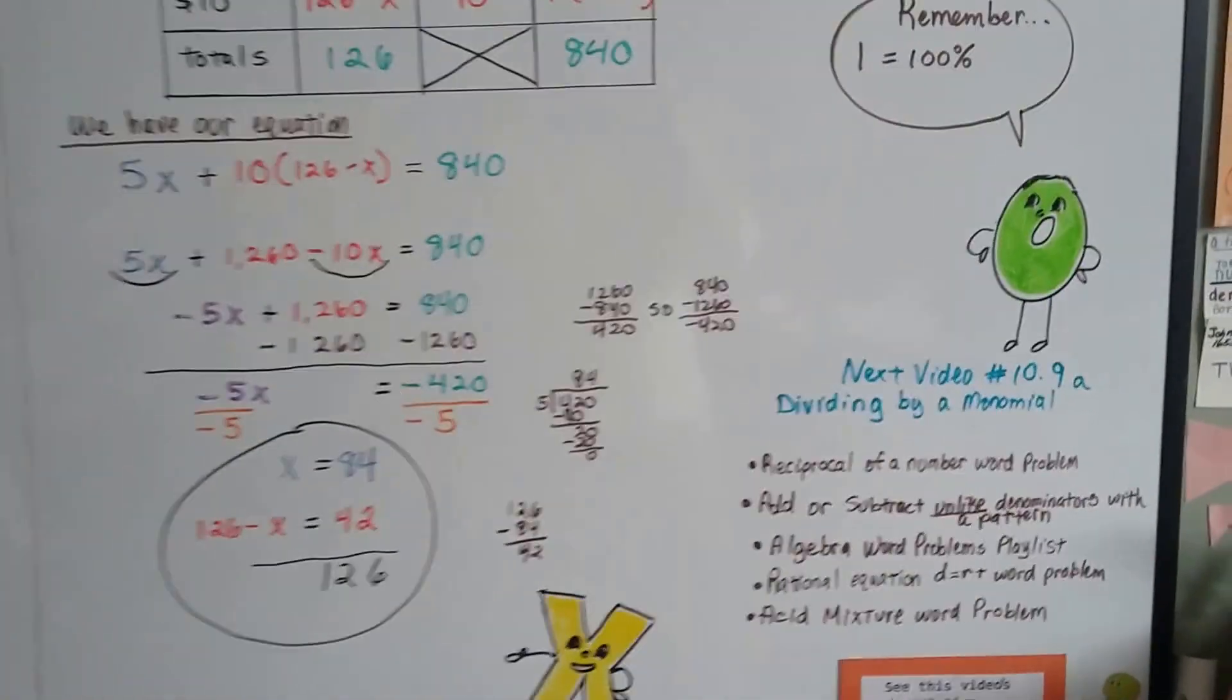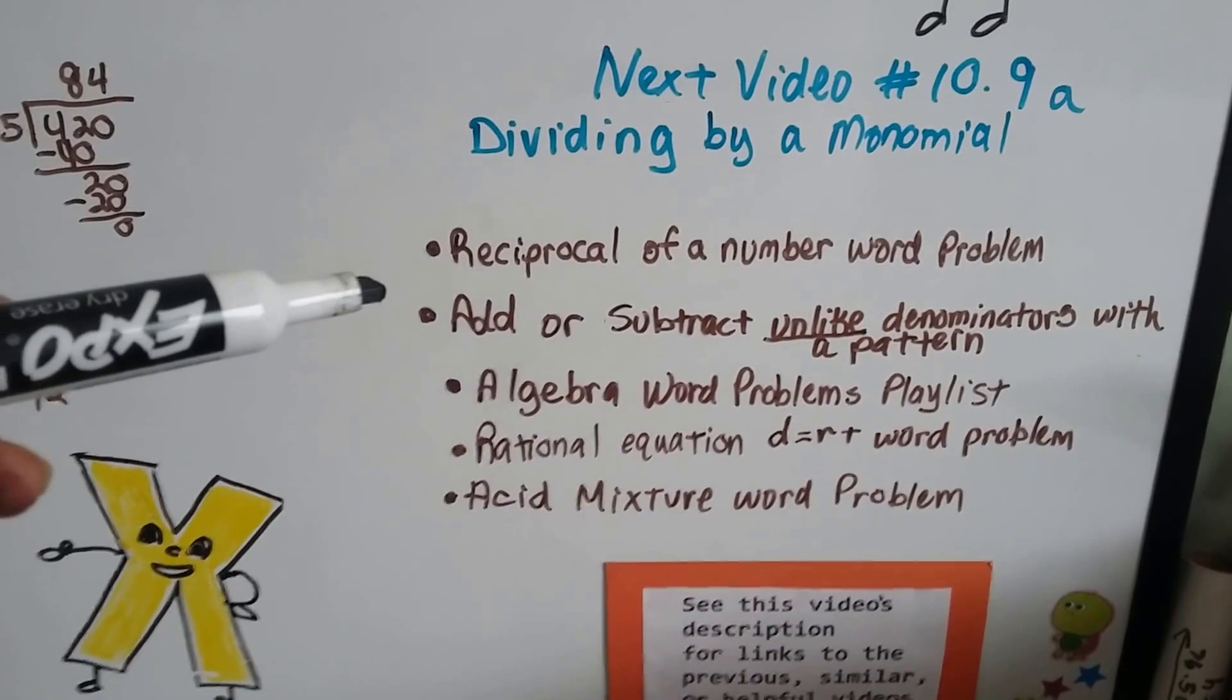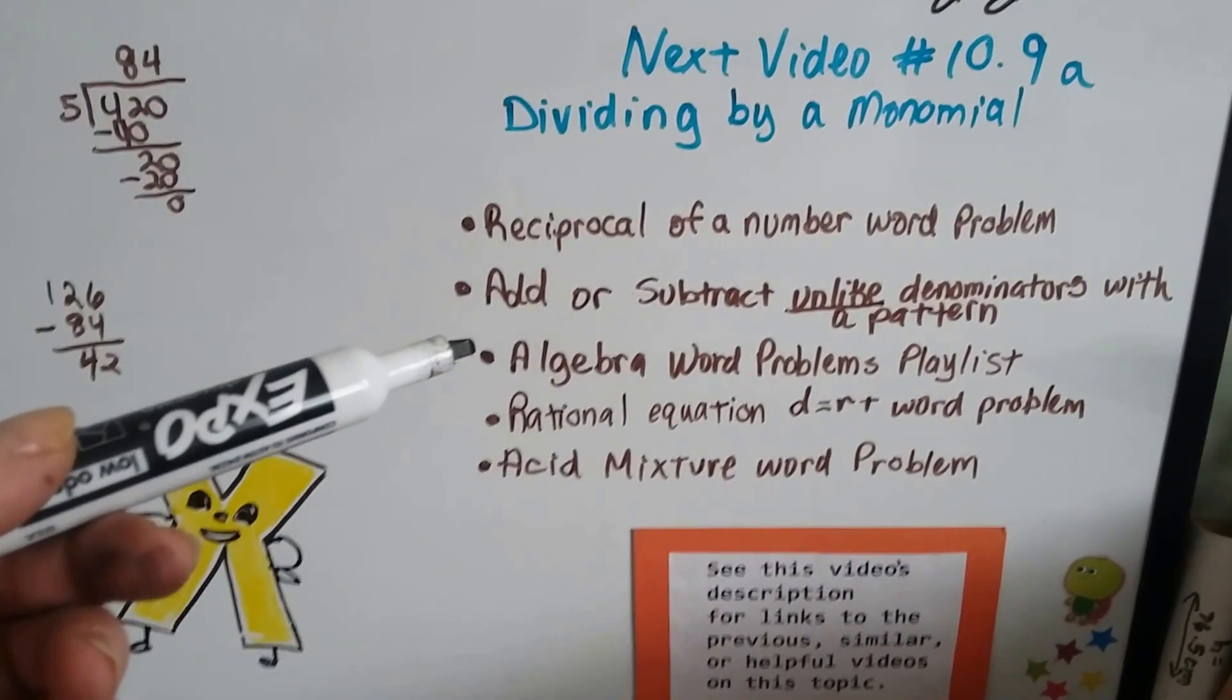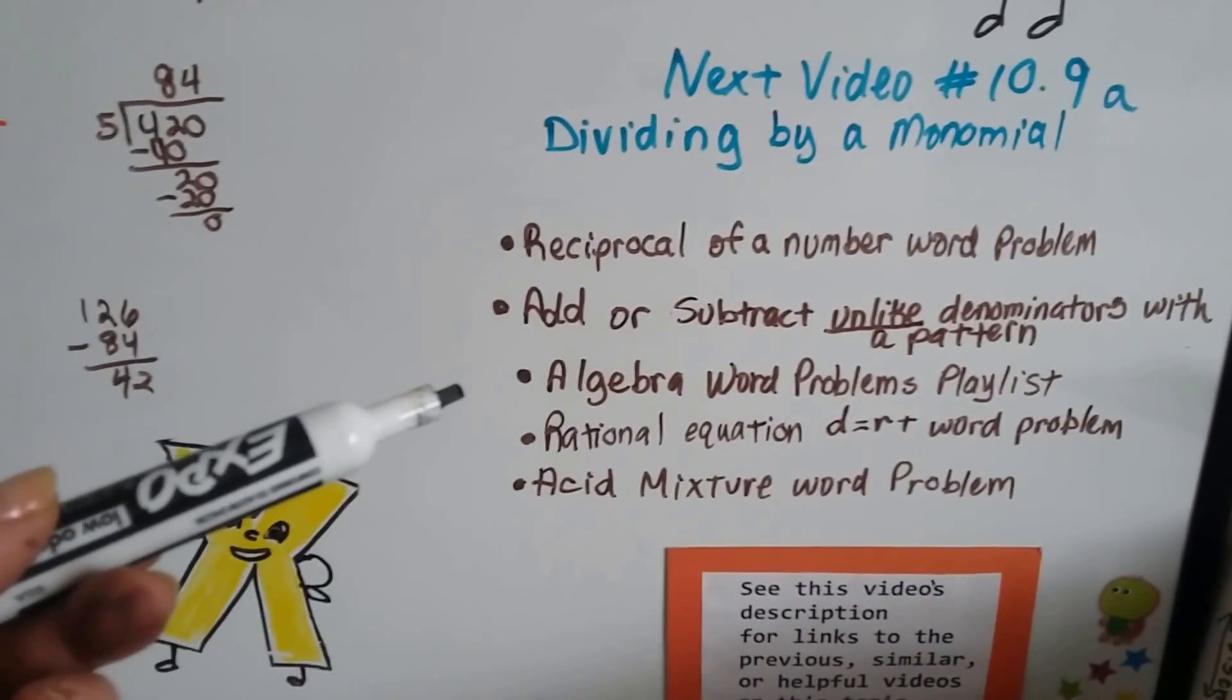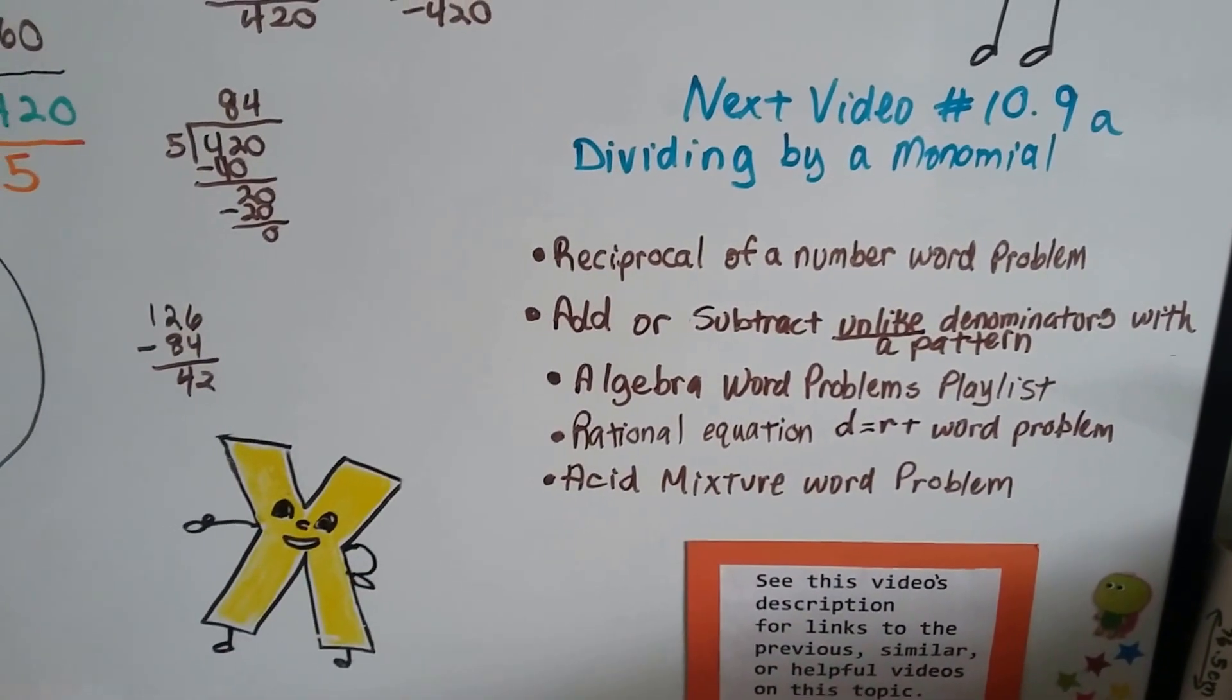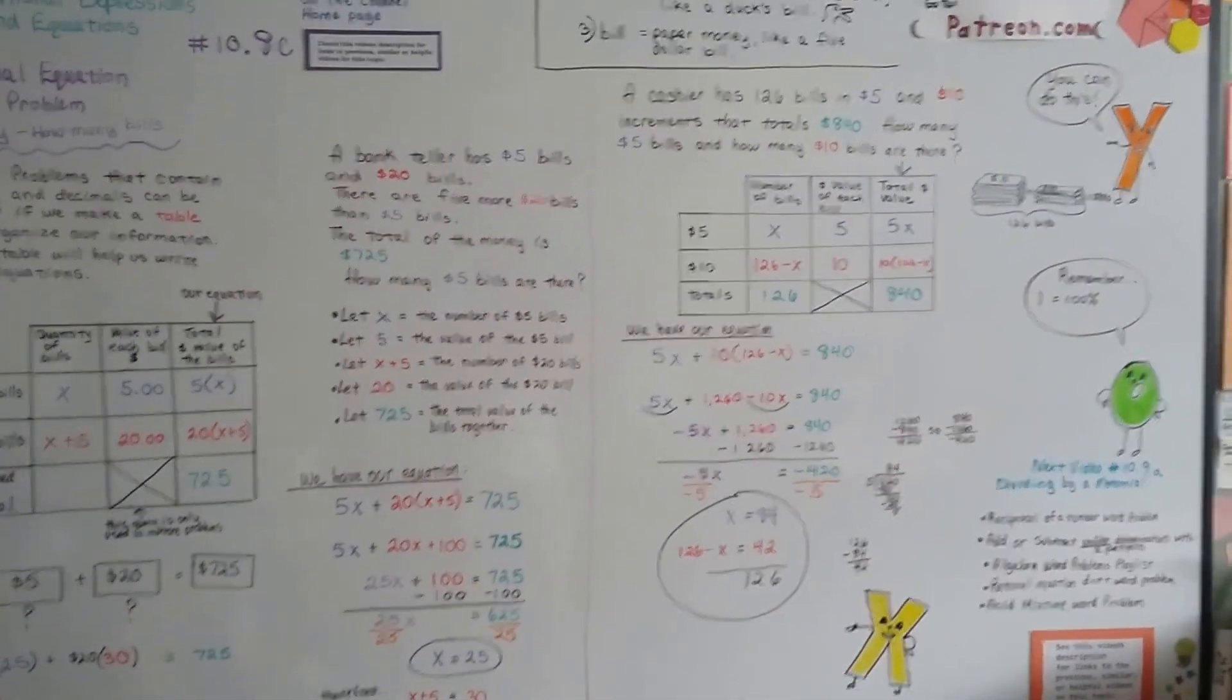Our next video is going to be 10.9a. We're going to talk about dividing by a monomial. If you want to see any of the previous videos, we did reciprocal of a number word problem. We did a lot of word problems. If you want to know how to add or subtract unlike denominators in a rational equation using a pattern, I have an entire algebra word problem playlist that's got lots of mixture and acid and pecans and cashew problems and all of that stuff. There'll be a link to those. And if you want to see the acid mixture problem we just did or the one with distance, rate, and time, there'll be links to those too. Let's talk about dividing by a monomial. And I'll see you there. Bye.